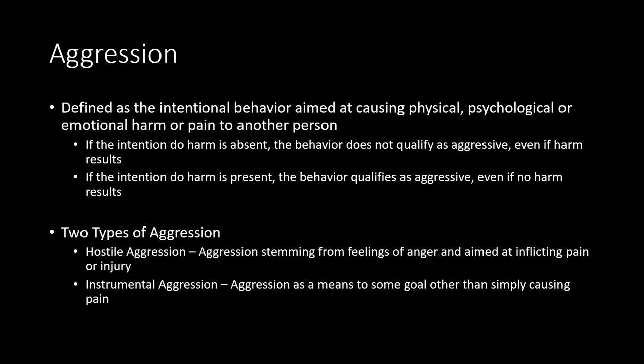Hostile aggression is aggression in which one's goal is to inflict pain or injury on another person — the end of that scenario is just the aggressive behavior itself. Revenge, for example, would oftentimes be considered hostile aggression because the goal of those behaviors is to cause injury or pain. Conversely, there's instrumental aggression — this is aggression or harm that results from some step along the way towards a goal where the actual end goal doesn't really have anything to do with the harm.